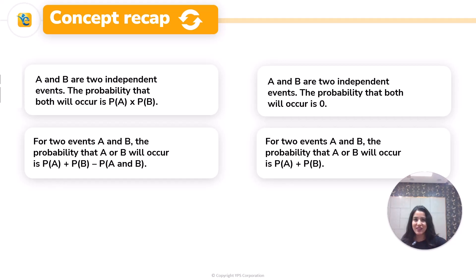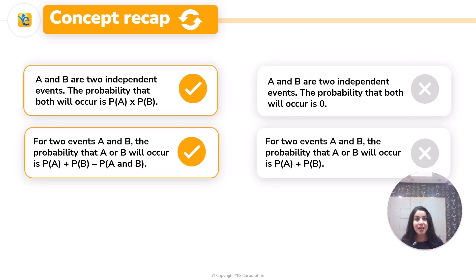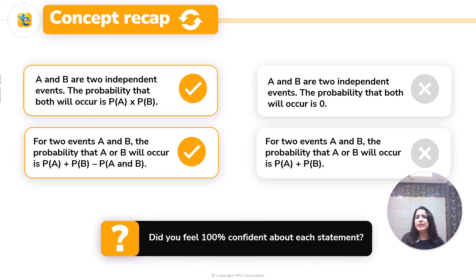Now it's time for me to give you your answers. Here you go. The first two statements that you see on the left-hand side are true statements, while the two that you see on the right-hand side are false. Did you get all four of these correct? If yes, were you 100% confident about each statement? If your answer is yes to both of these, very good, let's move on. But if no, you already know why you have to join.